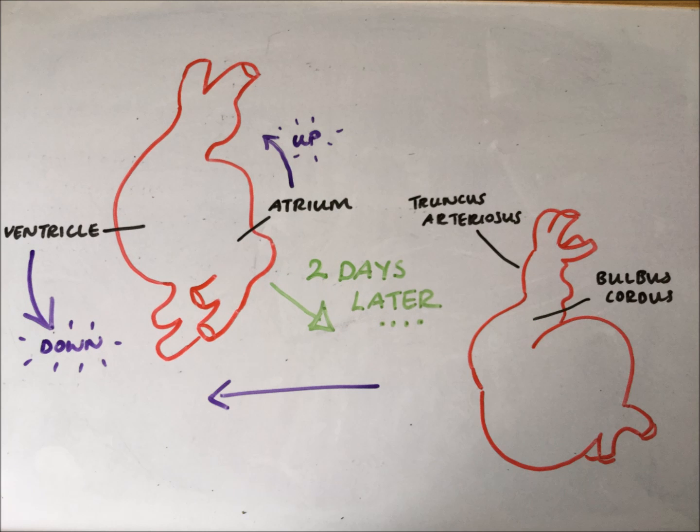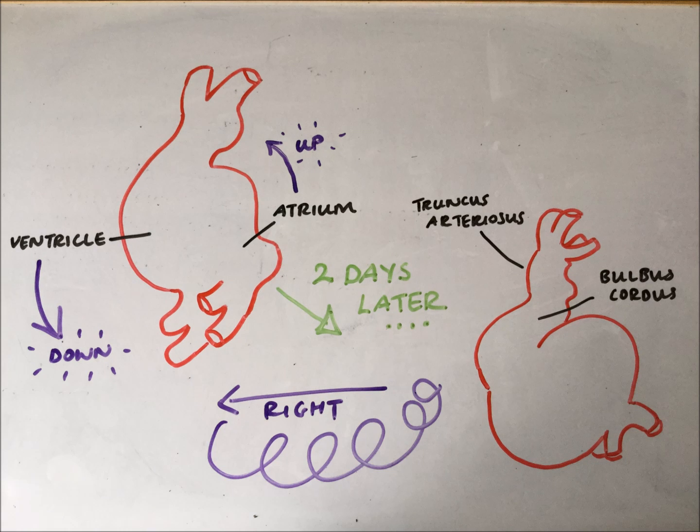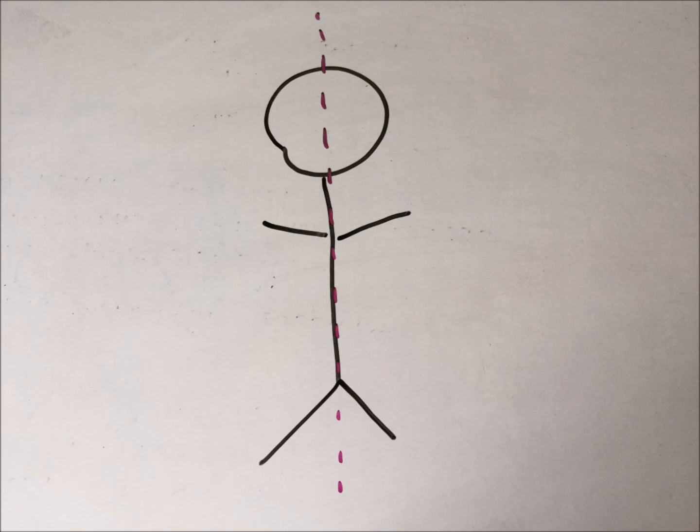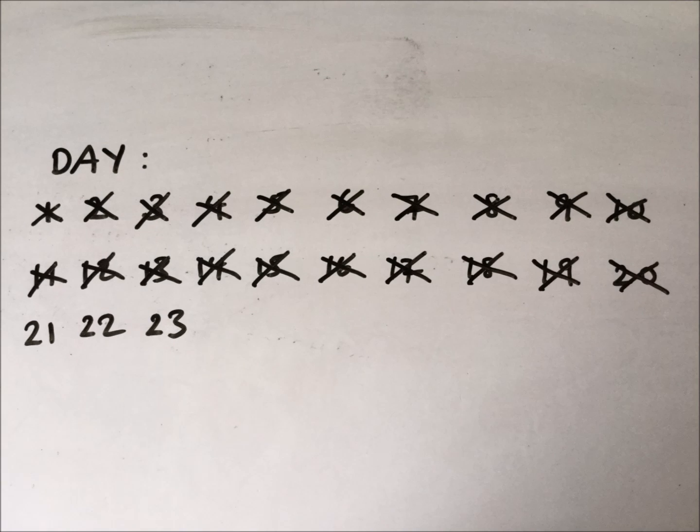And it loops back around. It's the first time that the body shows asymmetry. It's just as it first reaches day 23.